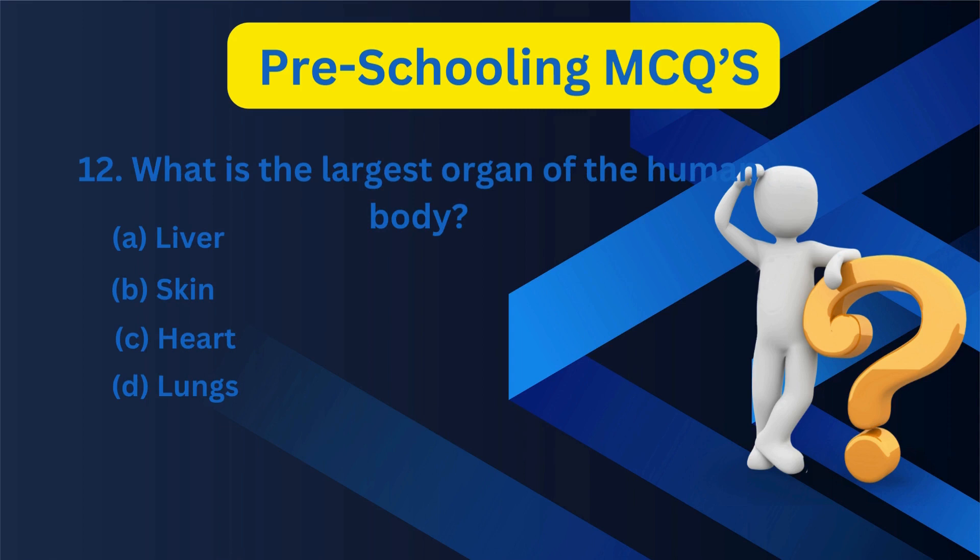12. What is the largest organ of the human body? A. Liver, B. Skin, C. Heart, D. Lungs. B. Skin.